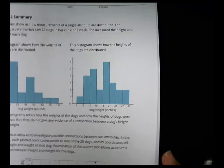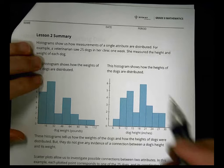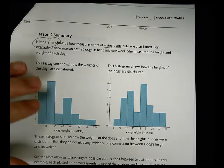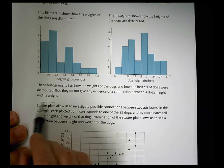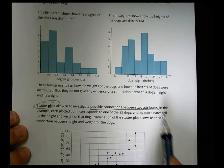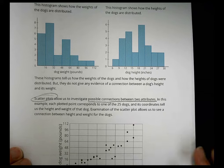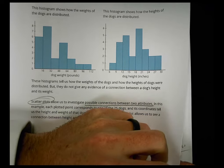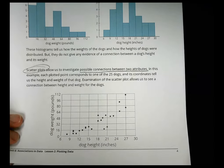So with that in mind, our summary here says histograms show us how measurements of a single attribute are distributed. So histograms work with a single attribute. So this is a histogram about dog weight and dog height. Now a scatter plot, though, allows us to investigate the possible connections between two attributes. So a histogram is a single, but a scatter plot lets you compare two things there. And that's really what we're talking about today is a couple different ways of representing the data that might be available when you do a little project and figure things out. We're going to pause there, stop there for today, and let you work on your homework. And we'll come back and check it together in just a few minutes.